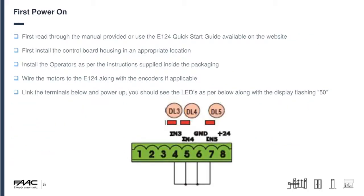For the first power-on start, I'd suggest first reading through the manual provided or using the E124 quick start guide available on the website. First install the control board housing in the appropriate location — ideally this should always be in view of the gate in order to safely perform the setup and configure gate speeds and parameters. We have heard of people who have to fit them down in the basement, which makes it extremely difficult to control the gate properly when running setups. Install the operators as per the instructions in the packaging, and wire the motors to the control board along with the encoders if applicable.